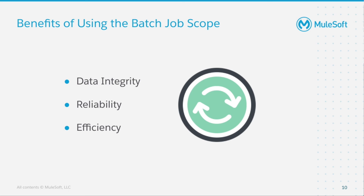Why bother using batch job scope? There are a number of benefits. First, data integrity: batch job scope allows for the description of a reliable process that automatically splits up source data and stores it into persistent queues. Second, reliability: batch job scope allows the processing of large data sets while providing reliability. In the event that the application is redeployed or Mule crashes, the job execution is able to resume at the point in which it stopped. Third, efficiency: asynchronous processing allows a better use of system resources.